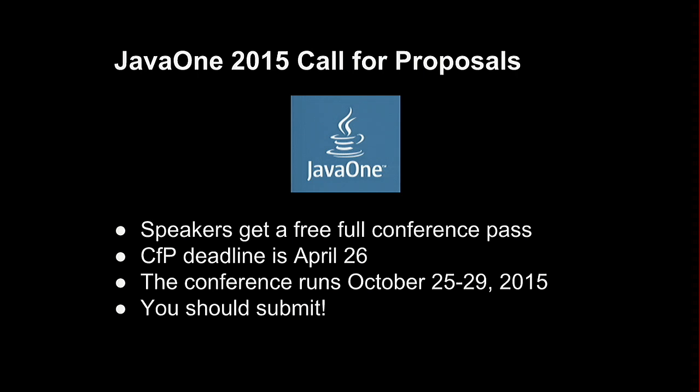The JavaOne 2015 call for proposals is open until April 26th. You should submit something because you get a free pass worth thousands of dollars. All you have to do is fly yourself there, which is just a minor detail, and find a hotel. Book the hotel before you submit your paper, actually. JavaOne is a lot of fun — it's the biggest Java conference, happens annually, and you should go.